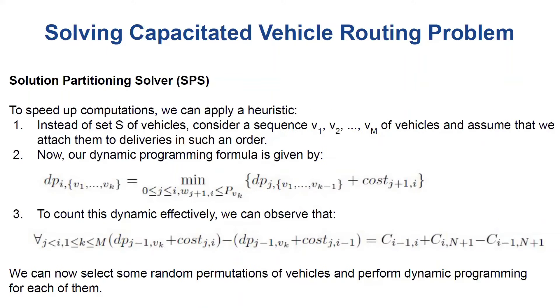This algorithm would still have a time complexity being an exponential function of the number of vehicles. But we can speed up the computations by assuming that instead of considering sets of vehicles, we consider just a given sequence of vehicles. So we can randomly select a sequence of vehicles and then run computations for this sequence. The formula in the dynamic programming is now simpler and we can do computations much faster.